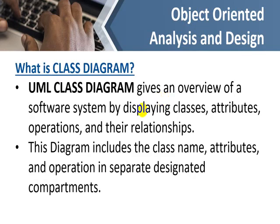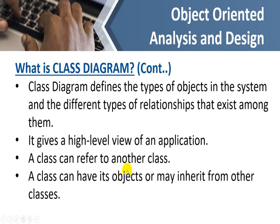A UML class diagram gives an overview of a software system by displaying classes, attributes, operations and their relationships. Simply, this diagram displays all the classes along with their attributes, methods and the relationships between them. The diagram includes the class name, attributes and operations in separate designated compartments. The class diagram defines the types of objects in the system and the different types of relationships that exist among them, giving a high-level view of an application.